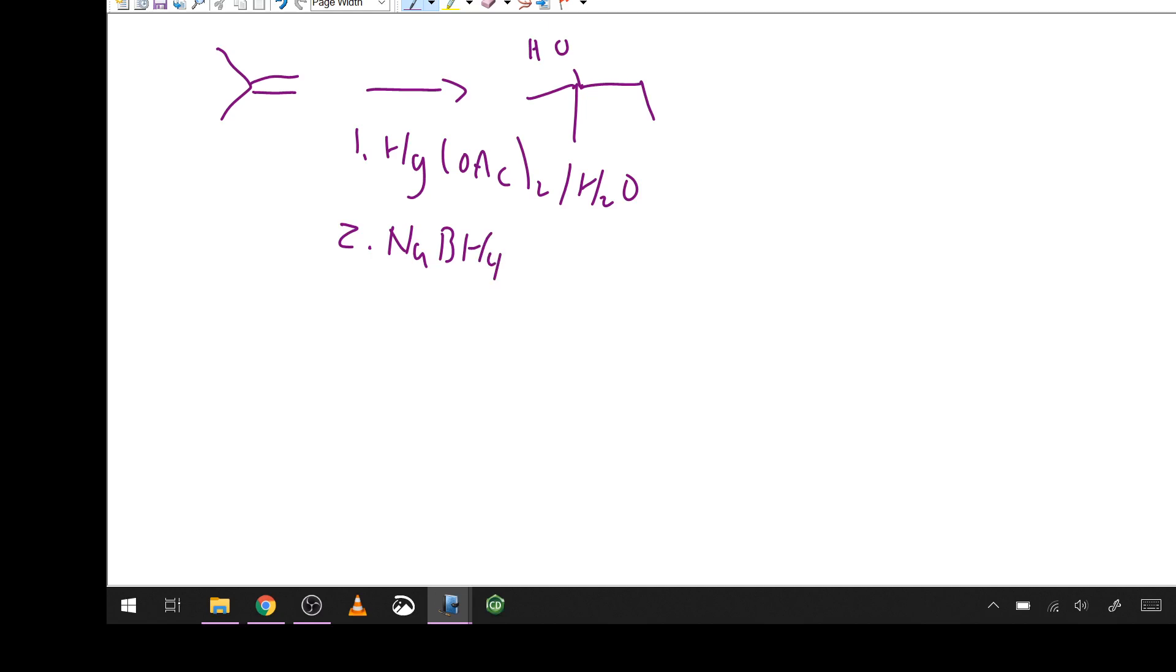Now that one is a little bit odd, but not terrible. We'll get there. Basically what we're doing at first is we're using a metal ion, mercury, as a surrogate for the proton that we saw in the acid catalyzed hydration.